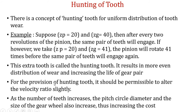For the provision of a hunting tooth, it should be permissible to alter the velocity ratio slightly; otherwise we cannot use hunting of a tooth. Note that if we increase the number of teeth by one, the pitch circle diameter and the overall size of the gear will also increase, which will increase the cost. This is the concept related to hunting of tooth.